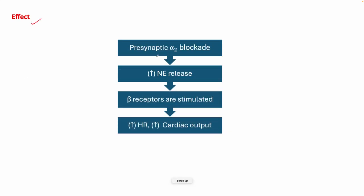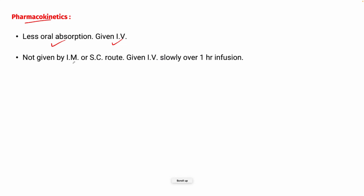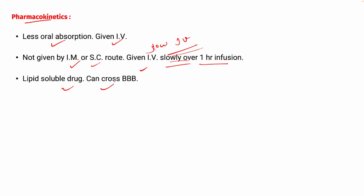Presynaptic alpha-2 blockade increases renin and noradrenaline release; as noradrenaline is released, beta receptors are stimulated, increasing heart rate and cardiac output. Regarding pharmacokinetics: absorption is poor so it is only preferred via IV — not IM or subcutaneous — administered as a slow infusion over 1 hour. It is a lipid-soluble drug and can cross the blood-brain barrier.